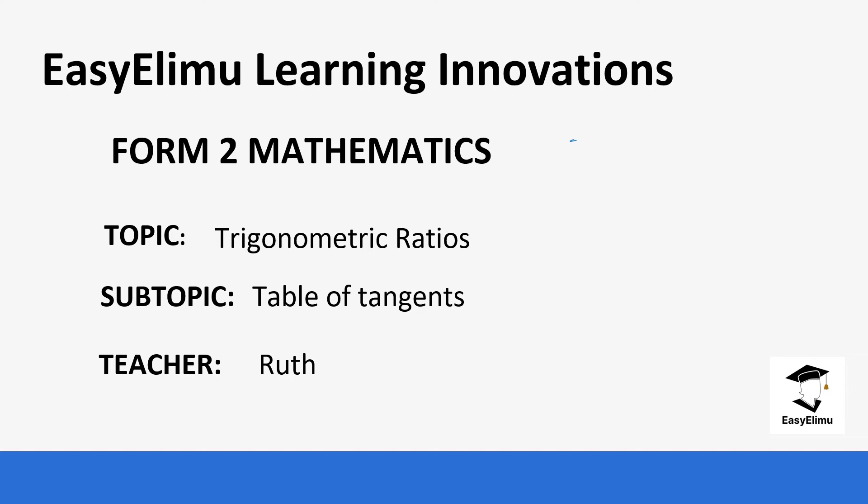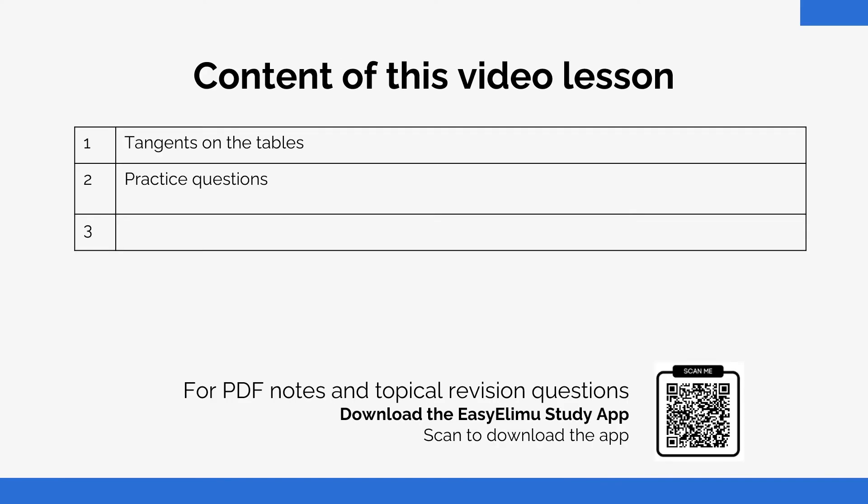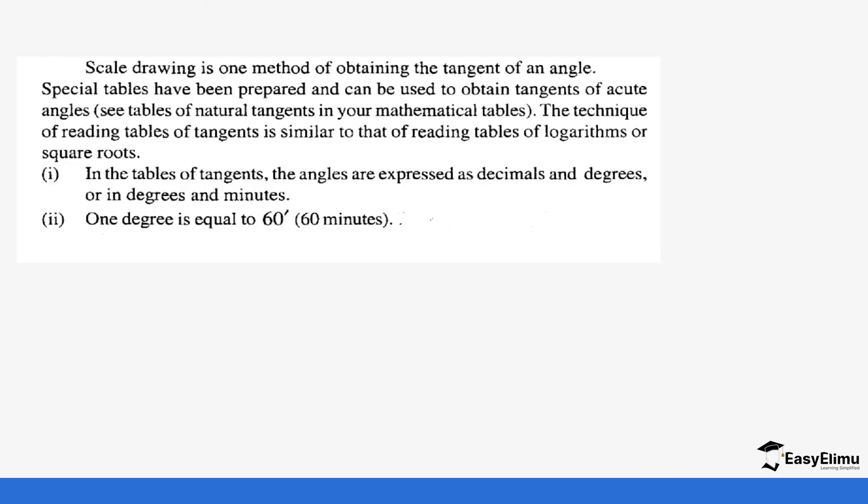We are going to look at the table of tangents. In the previous lesson we were able to calculate tangents using opposite sides and adjacent side to the acute angle, but in some cases you might need to use the table to be able to do that calculation. So when you are looking at the table of tangents, we can be able to calculate tangents of acute angles by scale drawing.